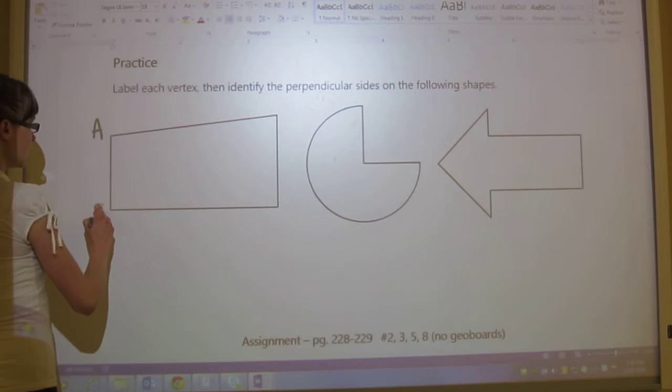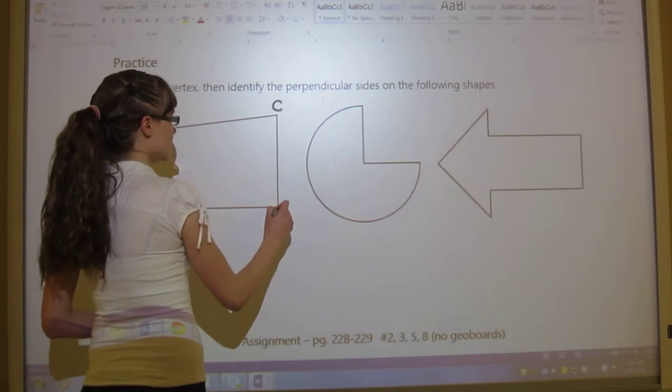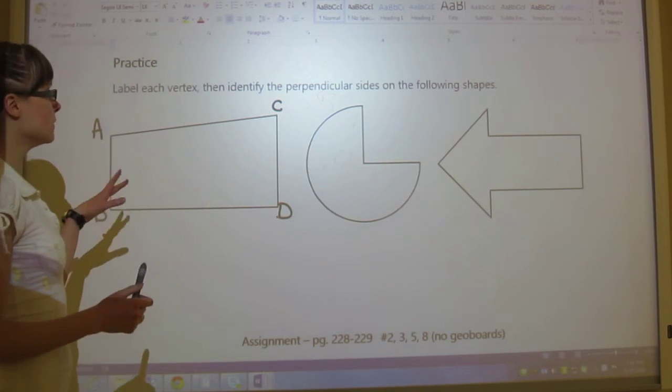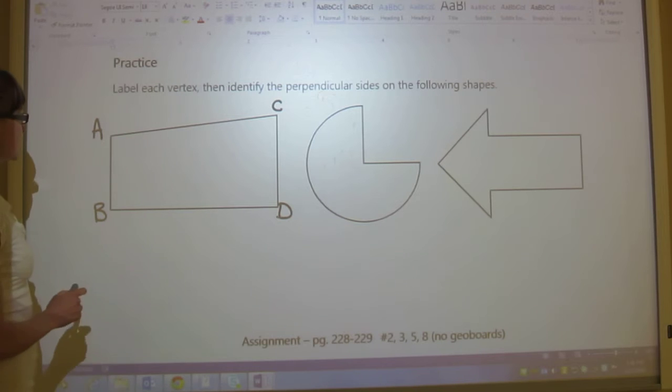We'll just go A, B, C, and D. And it doesn't ask us to name the shape. We just have to find the perpendicular sides.